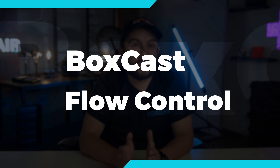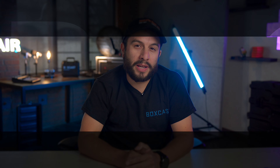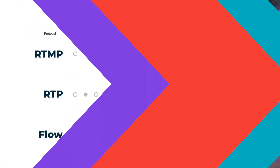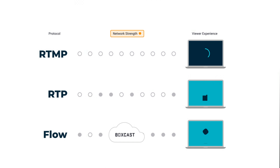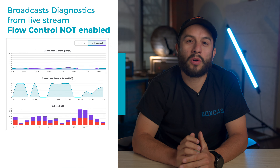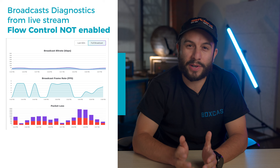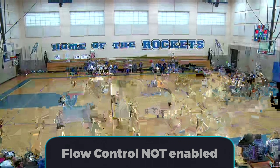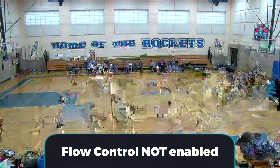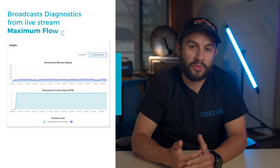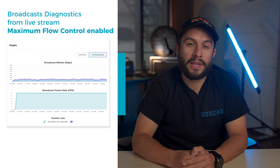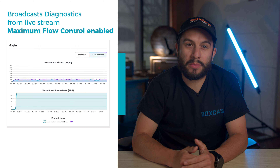Flow control is unique to our live streaming encoders, but it can really save your broadcast if your internet connection is just not the best. I saw the power of flow control when I was live streaming my daughter's basketball game. My internet connection was horrible and I had so many parents excited to watch the game and I didn't want to let them down. I started the first broadcast and it was just not watchable — I had a ton of packet loss. So I started the next live stream with maximum flow control enabled and the game streamed with no issues.